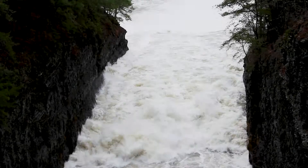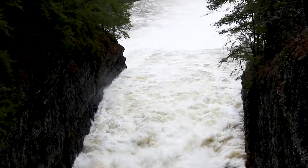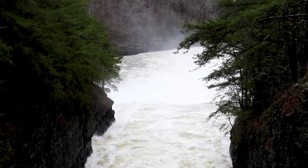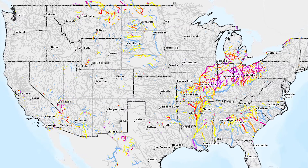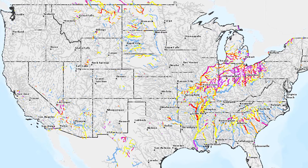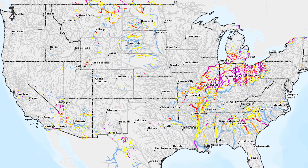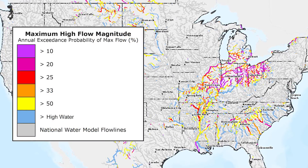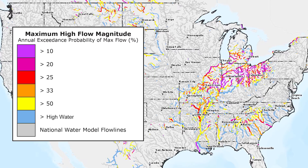Areas of ongoing high flows can be seen in the analysis version. Expected high flows can be viewed in the forecast versions, as seen with the 10-day example shown here. The flow is presented as AEP in percent.